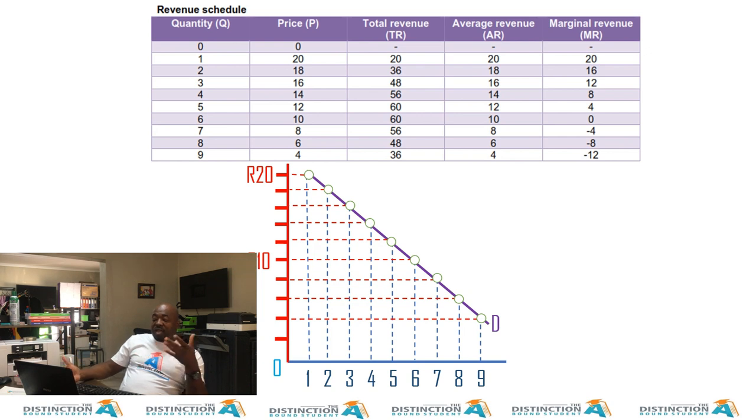So this demand curve, like I said, it looks exactly the same as the average revenue curve. So we can conclude D is equal to AR. So since they are equal, then is there anything else that's equal? Let's see.